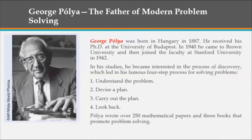In his studies, he became interested in the process of discovery which led to his famous four-step process for solving problems. The four-step process is: understand the problem, devise a plan, carry out the plan, and look back. Pólya wrote over 250 mathematical papers and three books that promote problem solving.